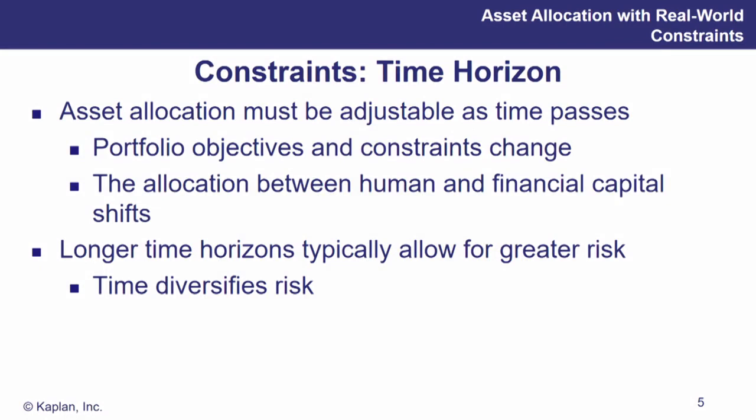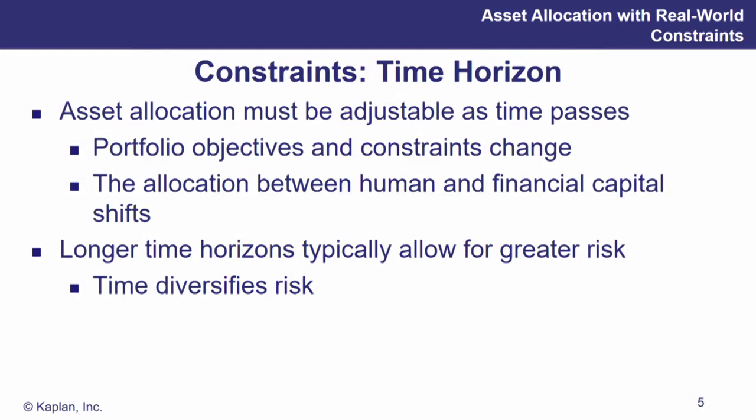Another constraint: time horizon. Asset allocation needs to be an adjustable process because as time passes, the various aspects of that investor change. They reach a different stage of life, or the institution has a greater or lower need for liquidity. Things change over time, and as part of that process with your client, you're going to keep checking in to get a sense of whether their situation is changing and if that needs to result in changes to the portfolio.